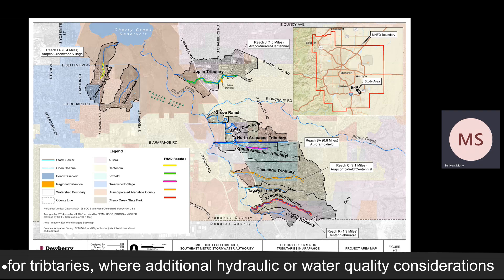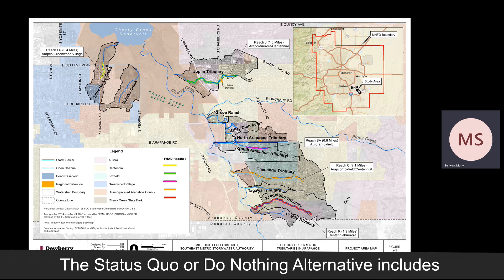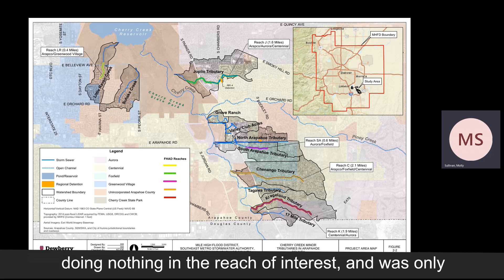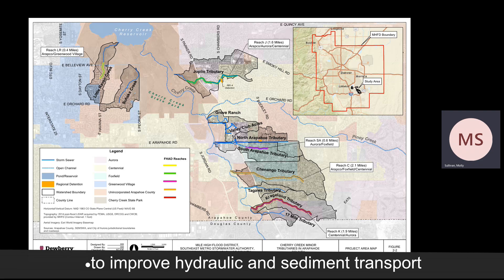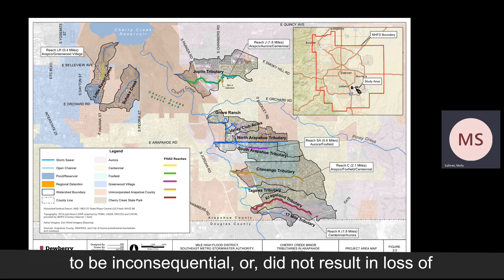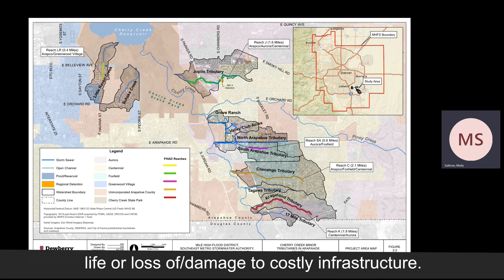The Status Quo or Do Nothing Alternative involves doing nothing in the reach of interest and was only explored when the consequence of doing nothing to improve hydraulic and sediment transport conditions within the tributary were determined to be inconsequential or did not result in the loss of life or loss of or damage to costly infrastructure.